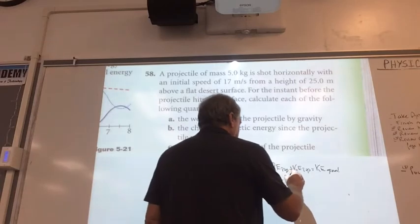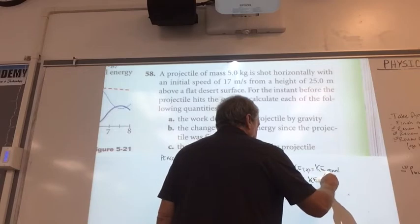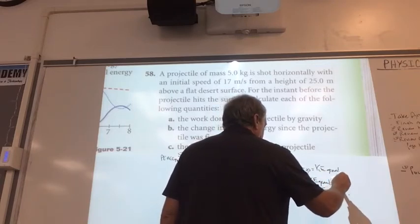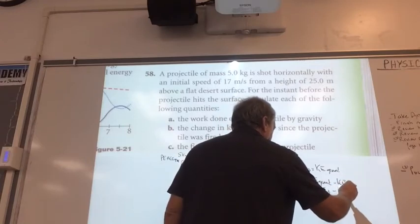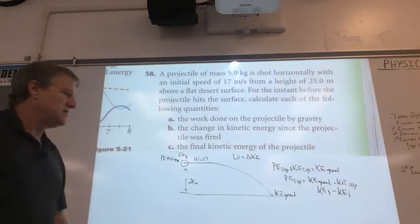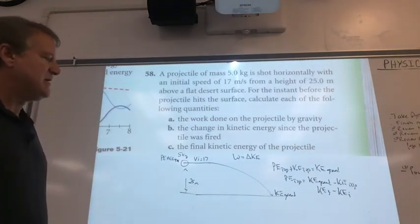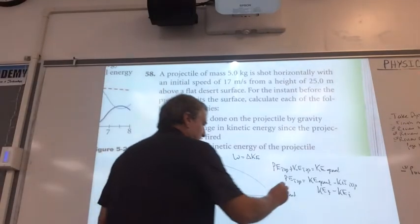If we subtract KE at the top from both sides, look what happens here. This is kind of crazy. We know that the PE at the top is equal to the KE at the ground. What do we call the kinetic energy final minus the KE at the top? Isn't that KE initial? The term for KE final minus KE initial is delta KE. So the PE at the top is equal to delta KE.